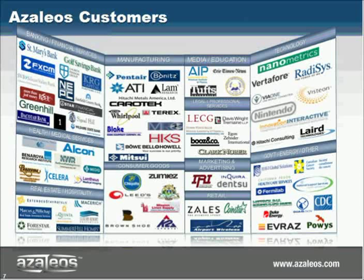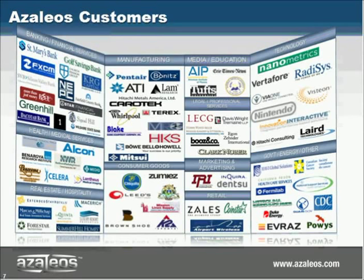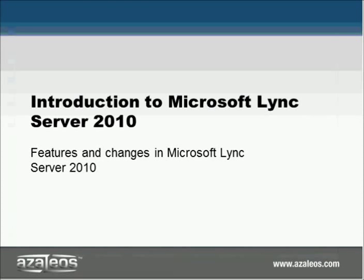We've got a ton of customers across most verticals. Our two most successful verticals are banking and financial services, as well as healthcare. We have some pretty big names including Chiquita the fruit company, ATI, Pentair — a large water distribution system in the Midwest — and Alcon, a large pharmaceutical company in the South Central region. There are a lot of seats and some very large Fortune 500 companies that are customers of ours. Enough of the marketing — I want to turn it over to Jeff Colvin, our Unified Communications Principal Consultant and one of the few Microsoft Certified Master Technicians focusing on Unified Communications, OCS, and Lync specifically.